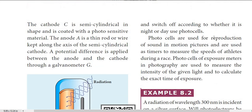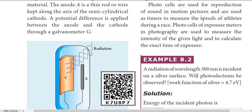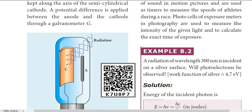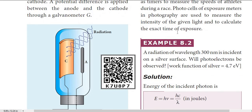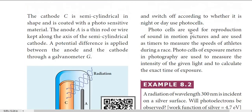Photocells are also used for reproduction of sound in motion pictures, and as timers to measure the speed of athletes during a race. Photocells in exposure meters in photography are used to measure the intensity of given light and to calculate the exact time of exposure.